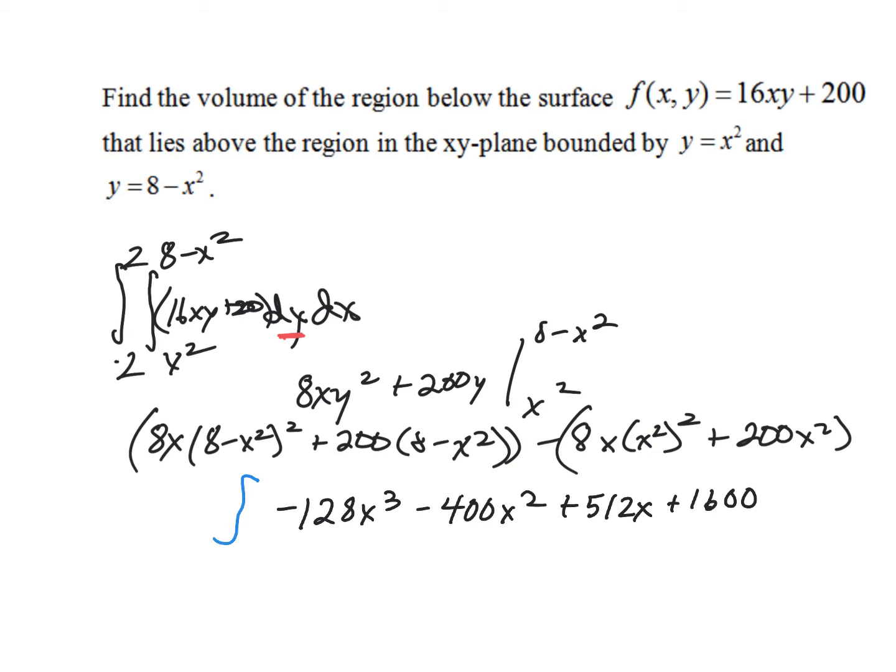So we would have negative 32x to the 4th minus 400 over 3x cubed plus 256x squared plus 1,600x evaluated to a negative 2.